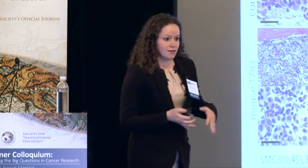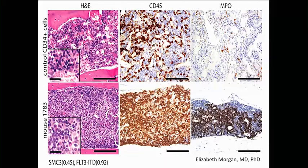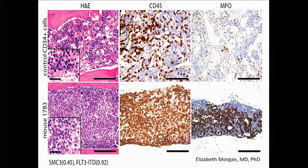Since every single model had a particular constellation of genetic features, every model morphologically was unique. What I'm showing you here is a model characterized by an SMC3 insertion at an allelic frequency of 0.45 — meaning approximately 90% of cells contain this SMC3 insertion — and FLT3-ITD in the same clone based on the allelic fraction. So what do these models look like? On the top I'm showing you a snapshot of the bone marrow from mice transplanted with control wild-type CD34 cells; on the bottom is a mouse that has this SMC3/FLT3-ITD clone present in the majority of cells.